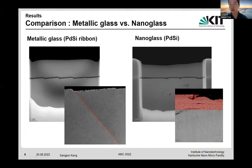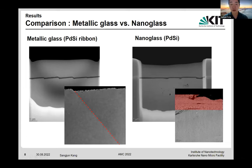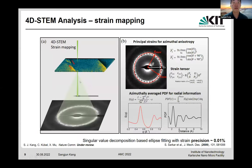In contrast, the deformed region for the nanoglass is rather broad, indicating that deformation is relatively homogeneous and delocalized, only at the surface area. Based on this observation, we speculate that residual strain can explain the difference between these two samples. We therefore developed our method further to map the residual stress field within the materials.